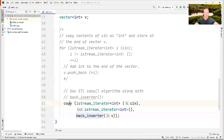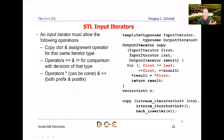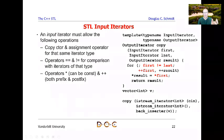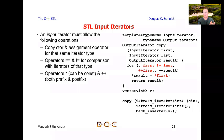Let's find the implementation of the copy algorithm. Here's an example of copy: it takes an input iterator to the first element and an input iterator to the last element. In our case, those will be the istream_iterator adapter for the beginning and the istream_iterator adapter for the end.